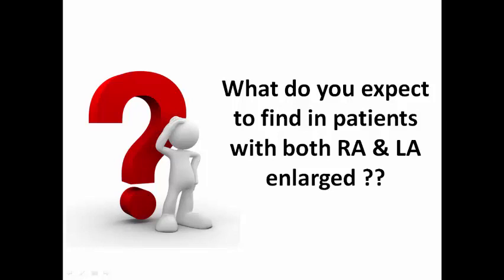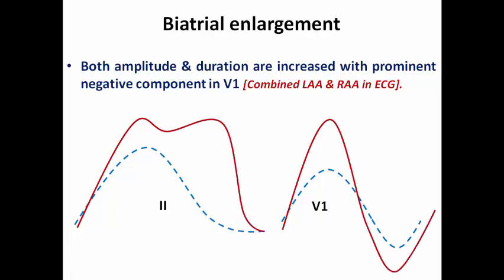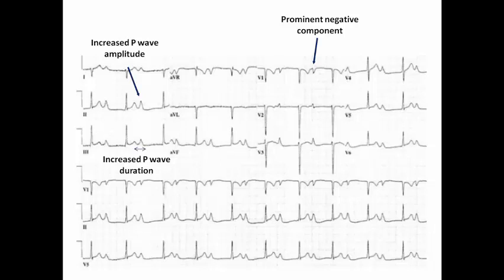What do we expect in patients with both right and left atrial enlargement? We expect both amplitude and duration to be increased, with a prominent negative component in V1. This is biatrial enlargement. In lead 2, both duration and amplitude are increased. In V1, duration is increased with a pronounced negative component, and the amplitude of the positive component is also increased. In this ECG example, P wave amplitude and duration are both increased in lead 2, and there is a prominent negative component in V1.